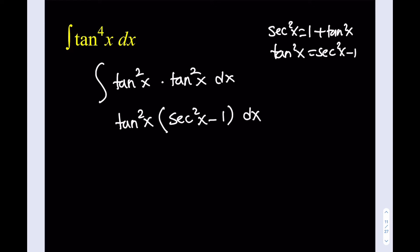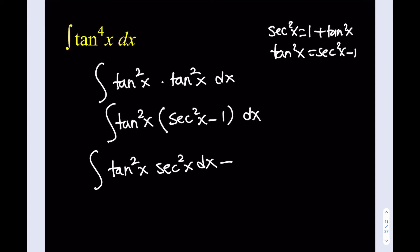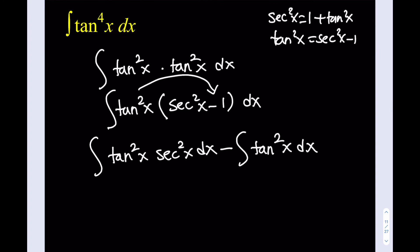We already know how to integrate tangent squared x — that's why we build these up in order. For the first integral, I have secant squared x dx, which is the derivative of tangent x. That means I should use u-substitution. If u equals tangent x, then du equals secant squared x dx. So the first integral becomes the integral of u squared du, which equals u cubed over 3 plus c.